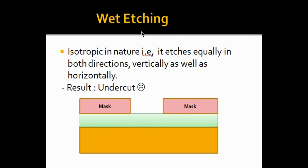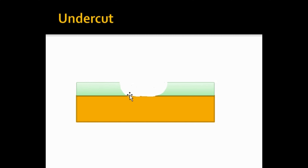Wet etching is isotropic in nature, meaning it etches equally in both vertical and horizontal directions. For example, if you apply the chemical, it reacts with the material and etches it off regardless of direction — it will also react with the side walls and etch them off. We do not want that; we only want to etch in one direction. The result is an unwanted undercut, which is the major drawback of wet etching.